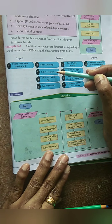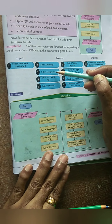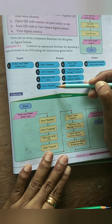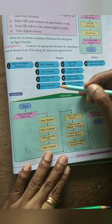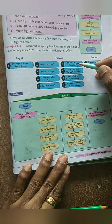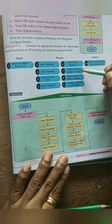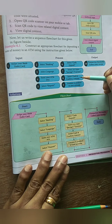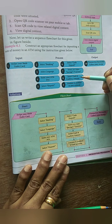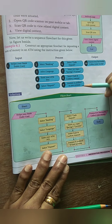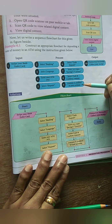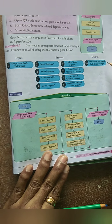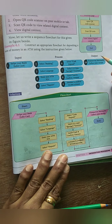Under the process, altogether there are eight processes given. First, you are going to select the banking, then select the language - English, Tamil, or any other. After that, they will ask for the ATM PIN number. Here we are going to deposit the money - select cash deposit. Then select the account type, either savings or current. Next, insert the cash in the machine, confirm the amount - say you deposit 10,000, confirm whether you are depositing 10,000. After that, your amount will be credited, meaning it will be added to your account. Finally, what will be the output? You will get a receipt from the machine - that is your output.